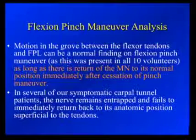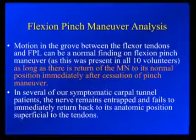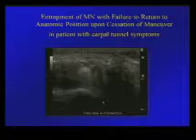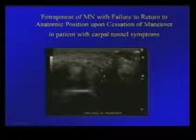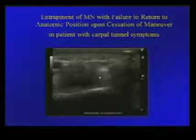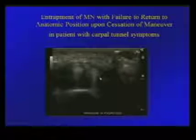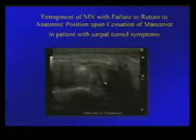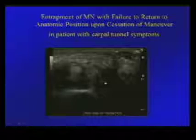In several of our symptomatic patients with carpal tunnel disease, we have noticed that the median nerve entraps within the carpal tunnel — in between the tendons of the flexor pollicis longus and the flexor digitorum — and does not spontaneously reduce to its anatomic position. With pinching, pronation, and wrist flexion, the nerve becomes entrapped, with an actual indentation from the flexor digitorum tendons upon the median nerve and no return to normal, causing carpal tunnel symptoms. This was seen in a very symptomatic patient — a sonographer who developed carpal tunnel disease after years of musculoskeletal sonography.